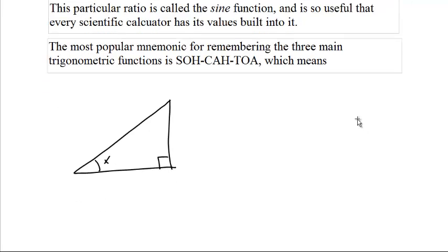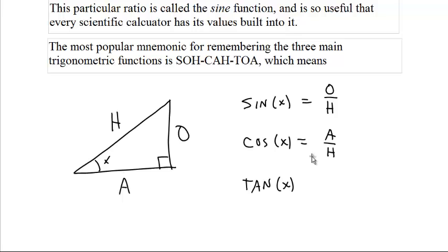If you have a triangle with an angle of x, and the opposite, the hypotenuse is H, the adjacent side is A, and the opposite is O, then the sine of the function is O over H. SOH, there's your SOH. CAH is the cosine of the angle is adjacent over hypotenuse, CAH. And TOA, the tangent of the angle is O over A. SOH-CAH-TOA.